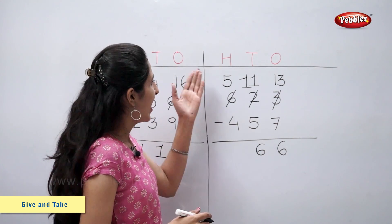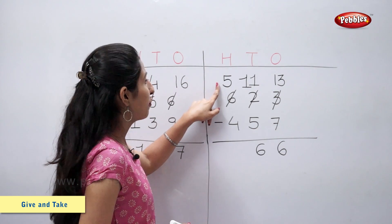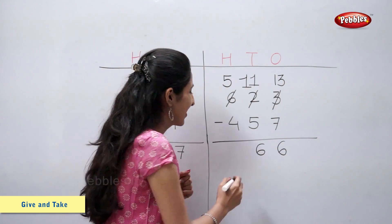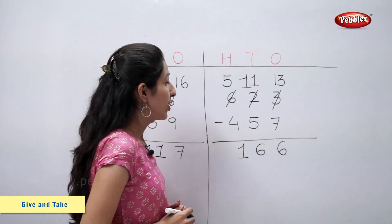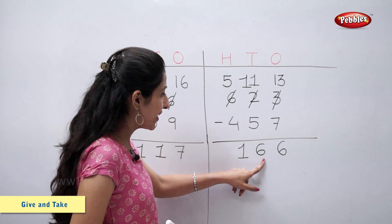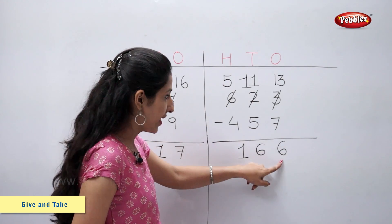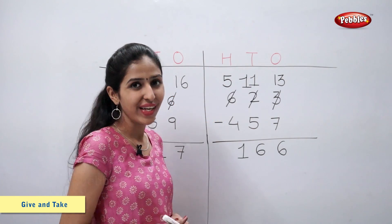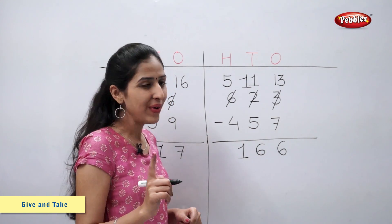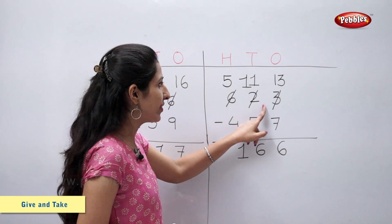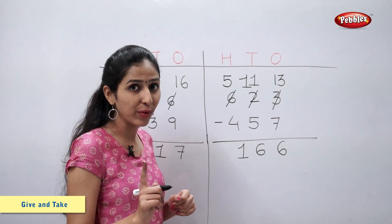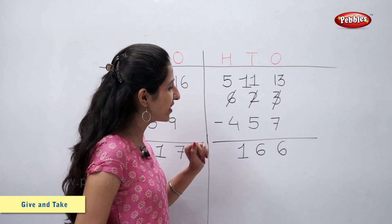Let's subtract hundreds. Five minus four is equal to one. So we have one hundred, six tens, and six ones. So the number is one hundred and sixty-six. So six hundred and twenty-three minus four hundred and fifty-seven is equal to one hundred and sixty-six.